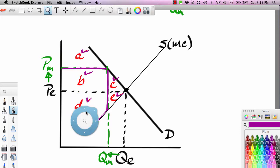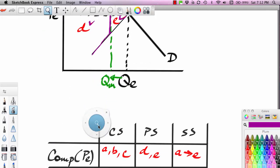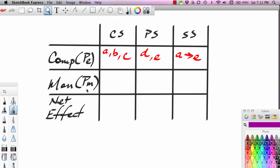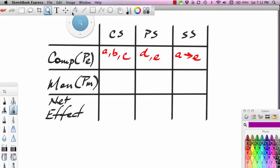All right, so we'll scroll down and we'll complete the table. So what are consumers going to get? Consumers are going to only get area A, right? So they lose what? They lose B and they lose C, which means they lose.